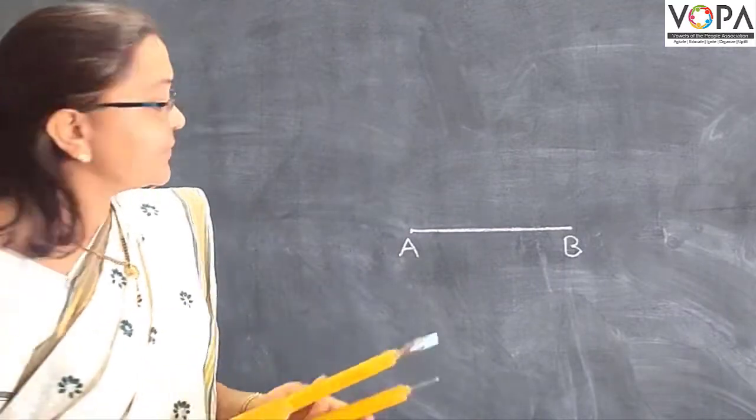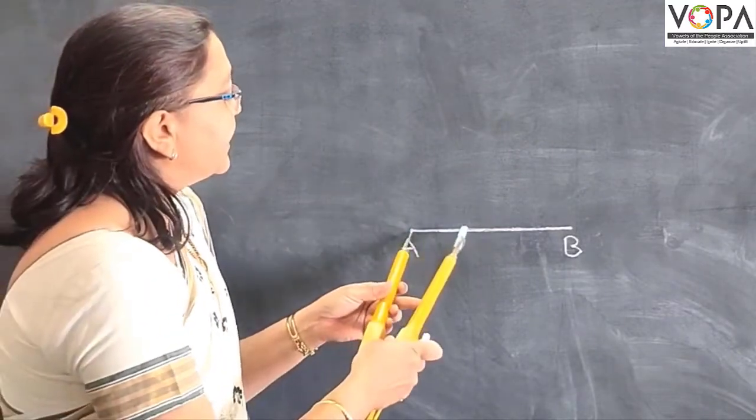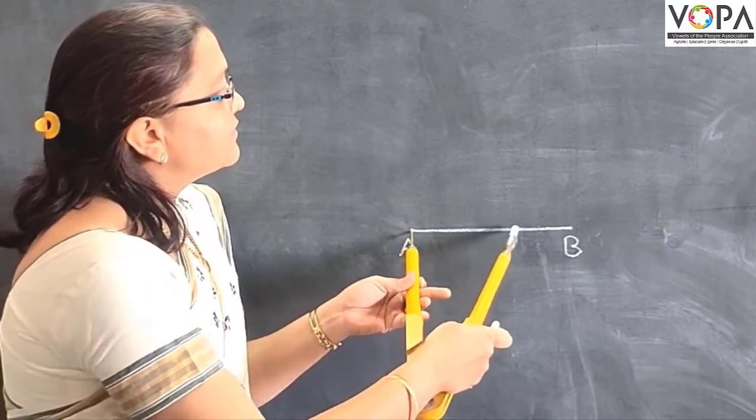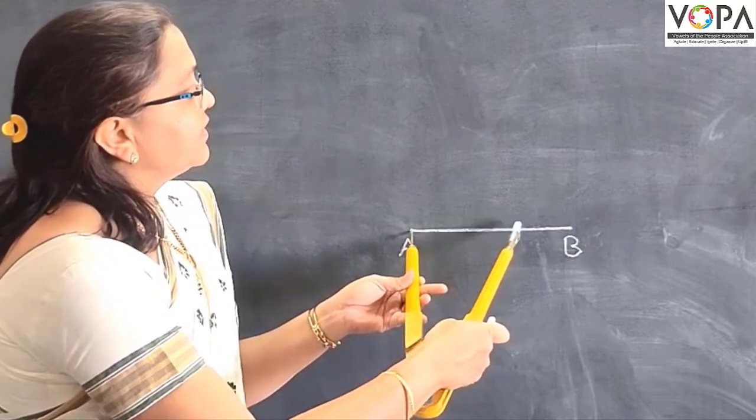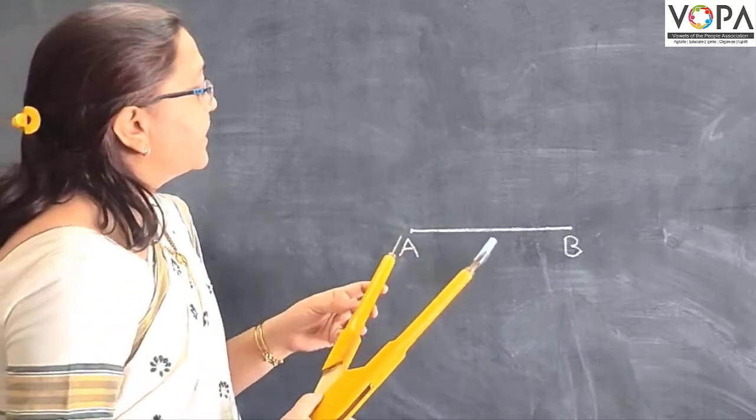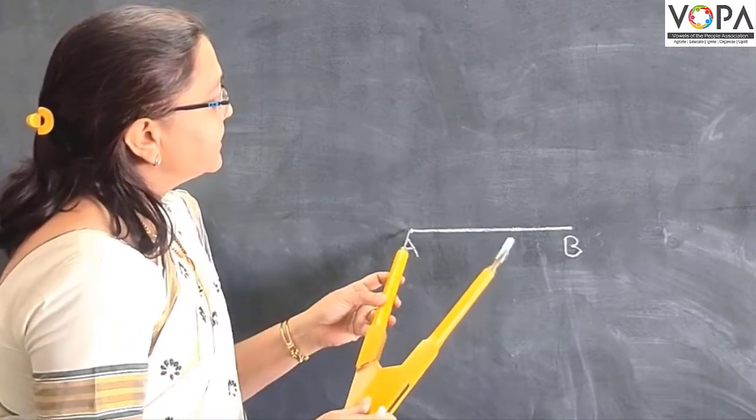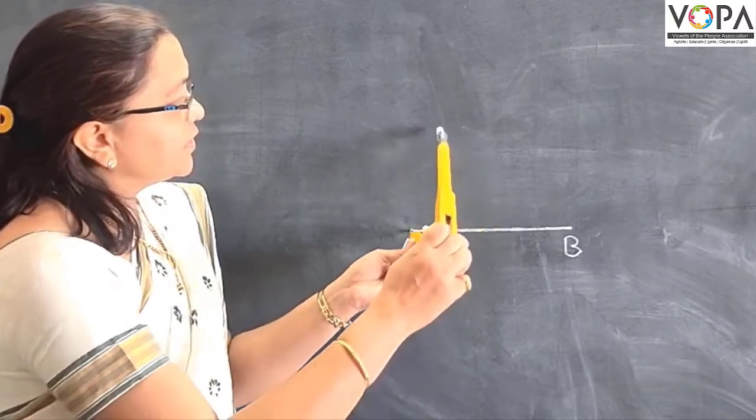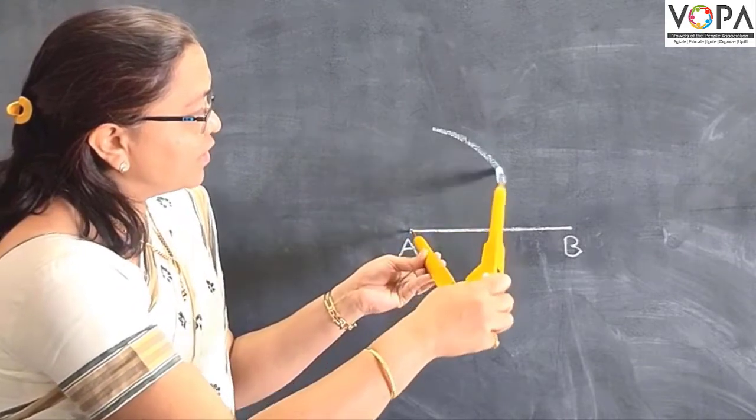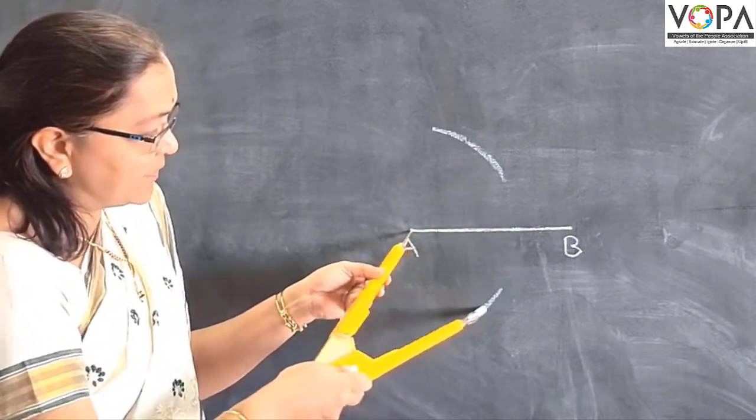Then take compass, take distance more than half in your compass. First take point A at the center, draw arcs on both sides of that segment.